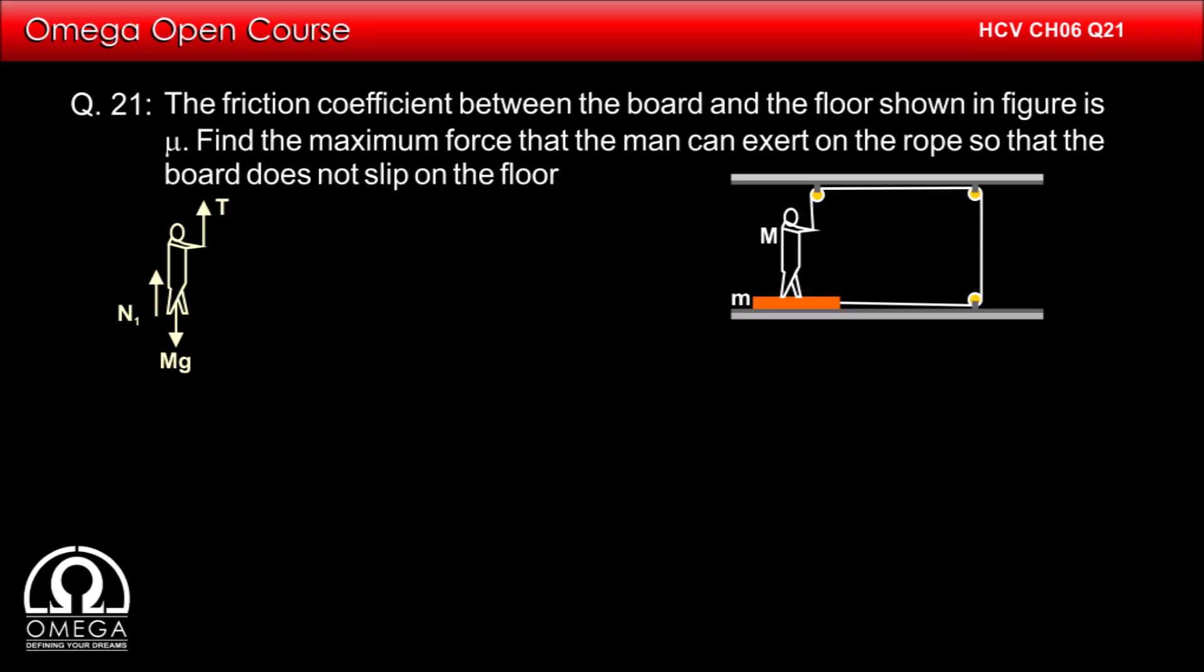Let the force with which the man is pulling the rope be T. The reaction of this force will pull the man upwards. Hence the man will experience a force T in upward direction.